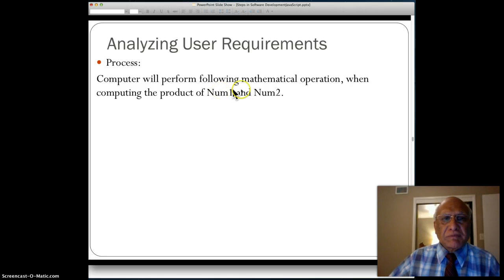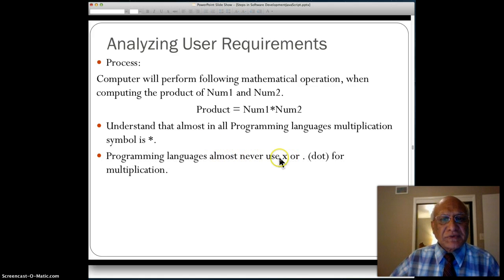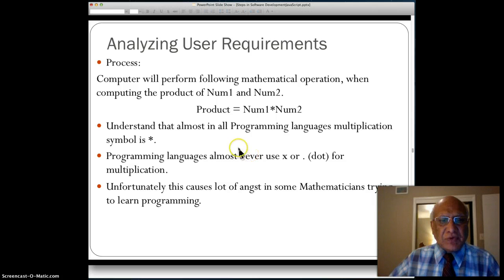Then the second part is what process is going on in the computer when this program is going to run. The computer will perform the following mathematical operation: computing the product of num1 and num2, or the multiplication process. Basically this expression will be evaluated. The right-hand side, num1, will be multiplied by num2, and the result will be stored in product. Understand that in almost all programming languages, the multiplication symbol is asterisk. Programming languages almost never use X or dot for multiplication. Unfortunately, this causes a lot of angst in some mathematicians trying to learn programming.